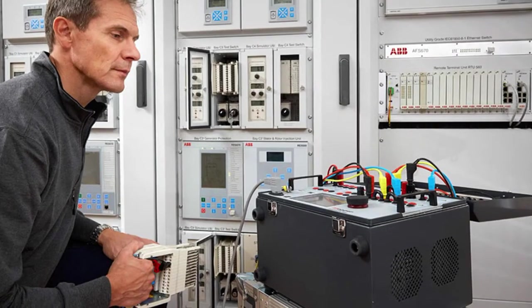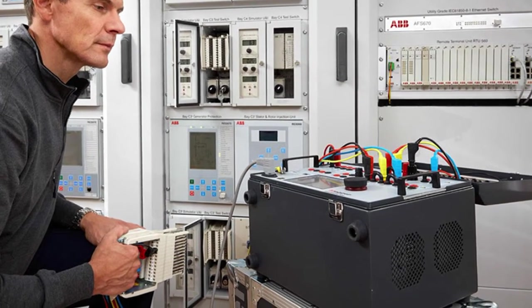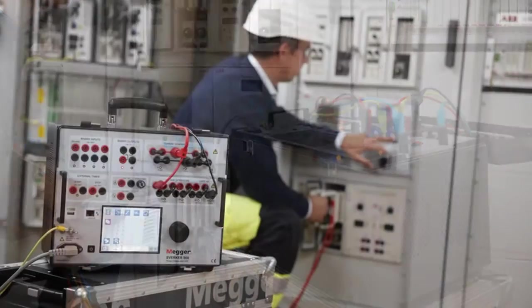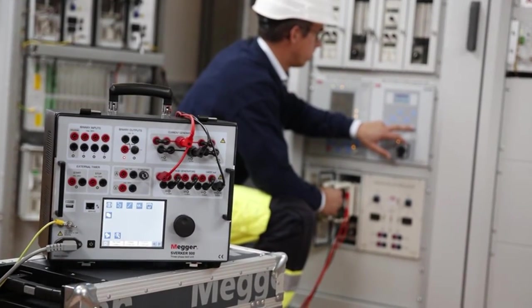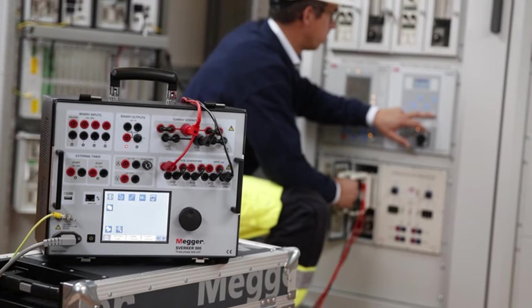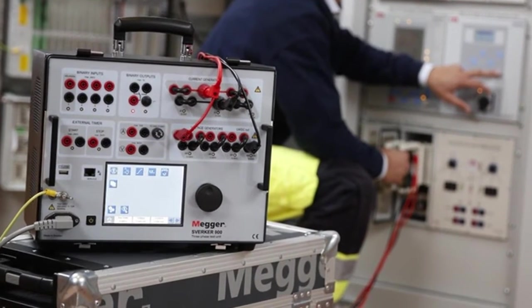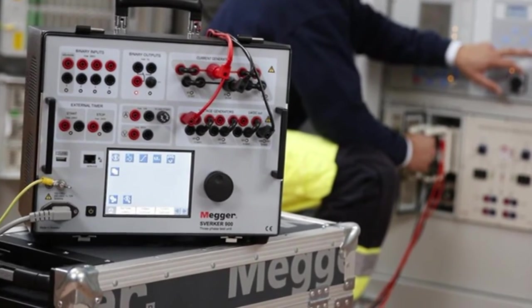The Sverker 900 is a standalone unit with all functions operated off the front panel. The front HMI provides the user with a very simple way to manually or semi-automatically perform the tests, from making a simple primary injection into switchgear to more complex secondary relay protection testing.